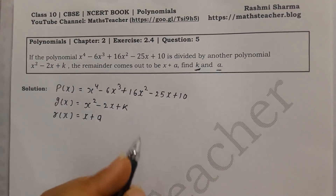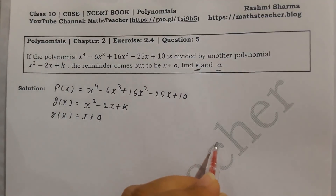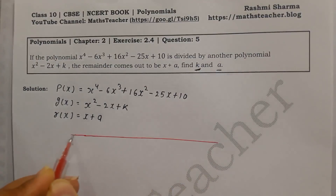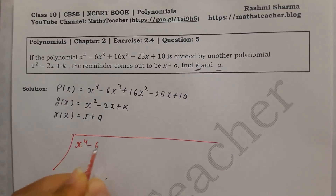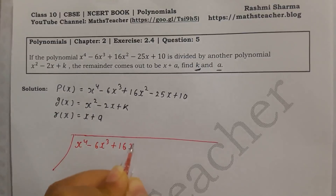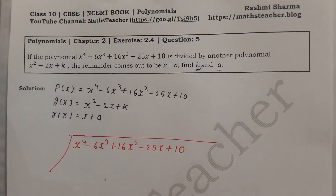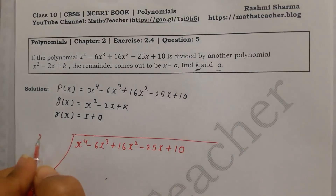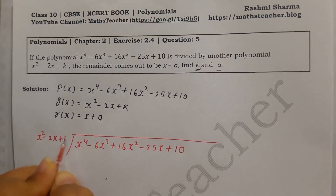So first we divide. We divide x⁴ minus 6x³ plus 16x² minus 25x plus 10 by the divisor x² minus 2x plus k.